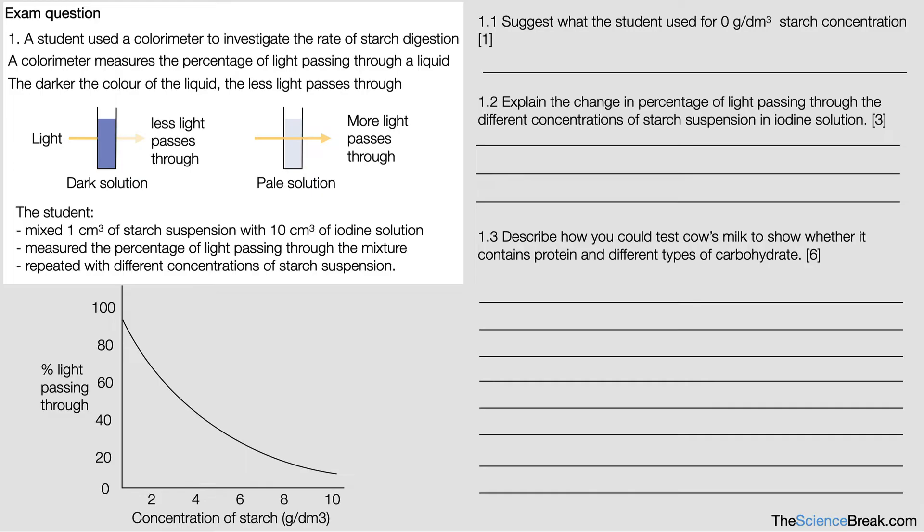Now, a colorimeter is not mentioned in the specification, but in fact it does tell you what a colorimeter is here. It says a colorimeter measures the percentage of light passing through a liquid. The darker the color of the liquid, the less light passes through.